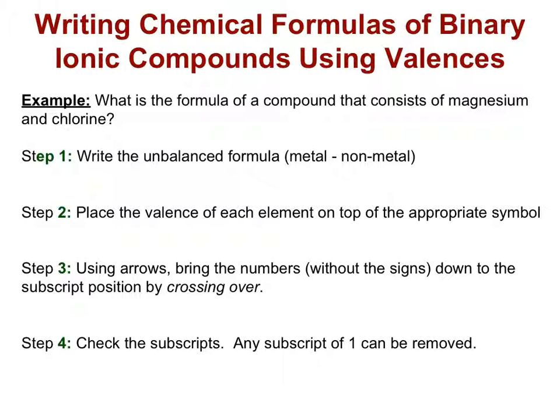So first step, what we want to do is write the unbalanced formula and we're always going to write our metal first followed by our nonmetal. So this would be Mg and Cl.